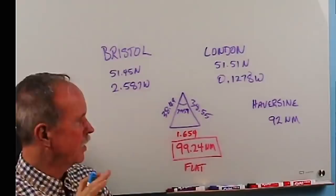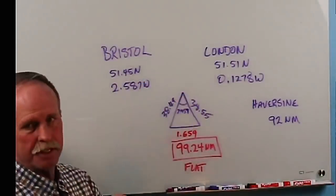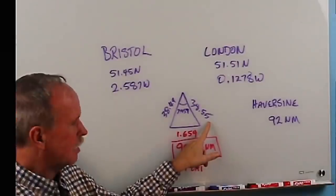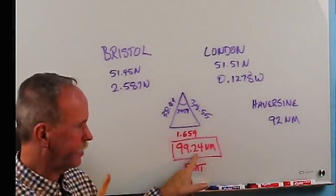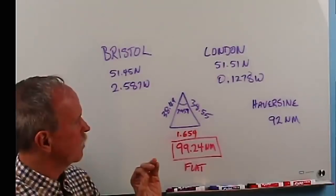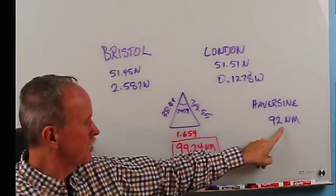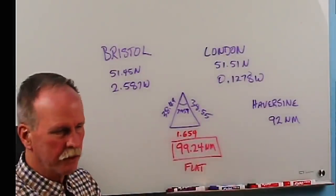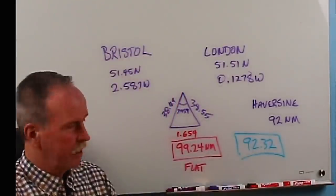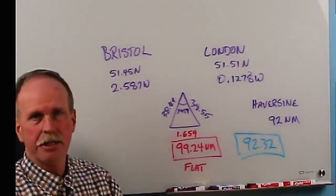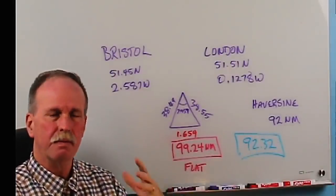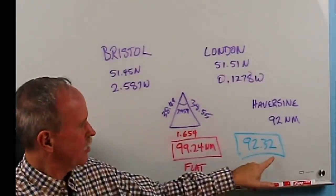In the final example, let's take one that we did earlier, and that is the distance between London and Bristol in the UK. Here are the coordinates for both cities. On the flat earth, here's the triangle that you would have to set up to find the distance between those two locations on a flat earth on a flat plane of 99.24 nautical miles. The Haversine formula says the distance between those two longitude and latitudes is 92 miles. The actual Google Earth distance is 92.32 nautical miles. Do these numbers have to exactly match? No, because we have some error in this number.